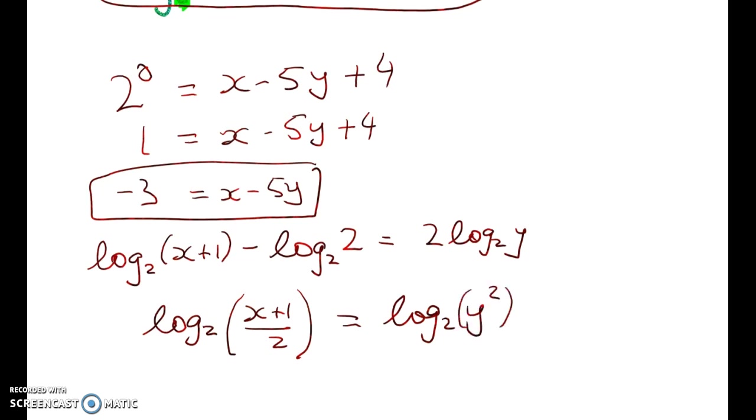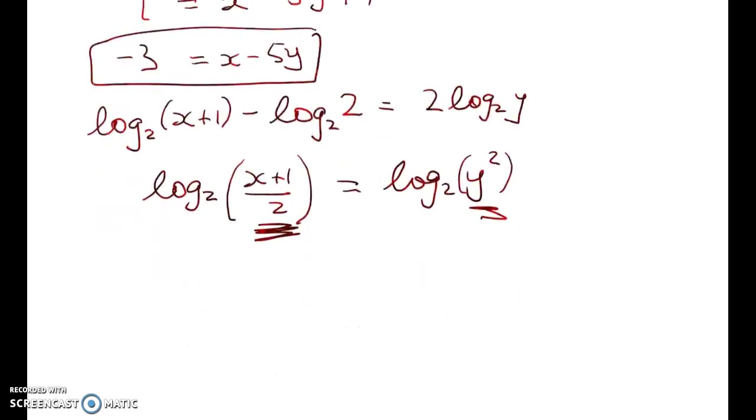Since the logs have the same base, this thing here has to equal this thing here. That leaves me with (x plus 1) is equal to 2y squared. Skipping a tiny step. So x is equal to 2y squared minus 1.